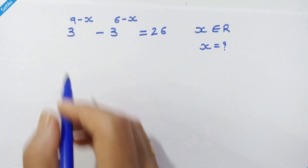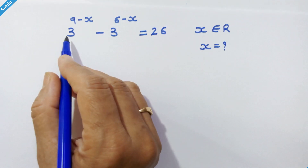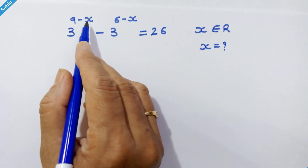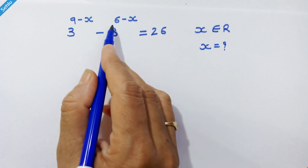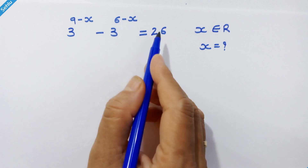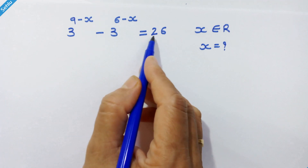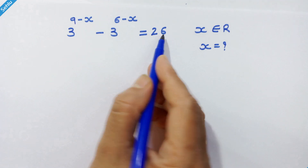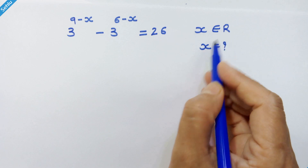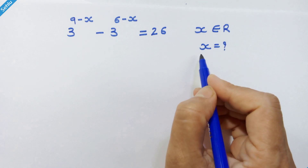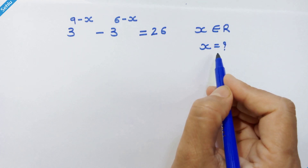Hello friends. Here we have 3 raised to 9 minus x, minus 3 raised to 6 minus x, is equal to 26, where x is a real number. Let's solve for x.